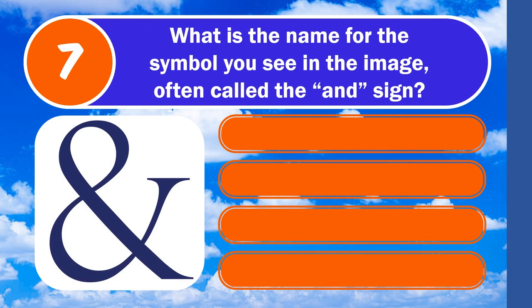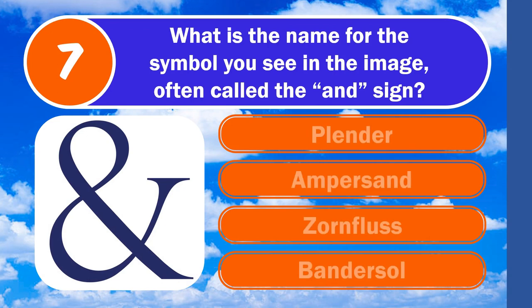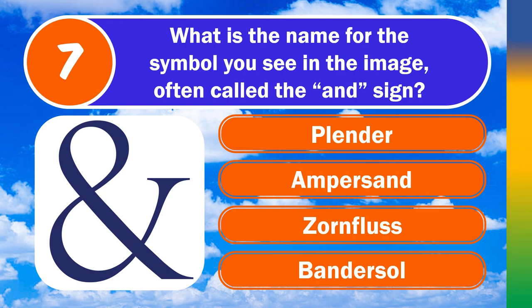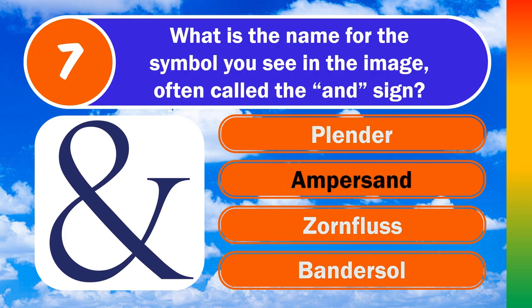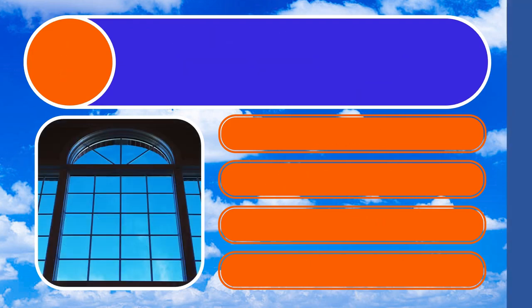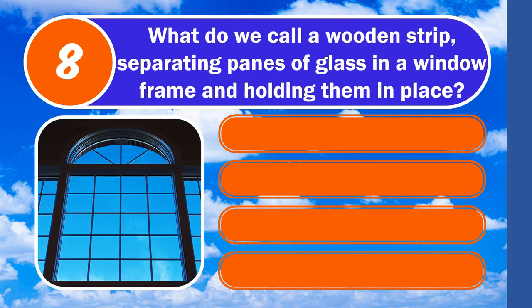Question seven: what is the name for the symbol you see in the image, often called the 'and sign'? Is it Blender, Ampersand, Zornfluss, or Bandersall? The answer is ampersand.